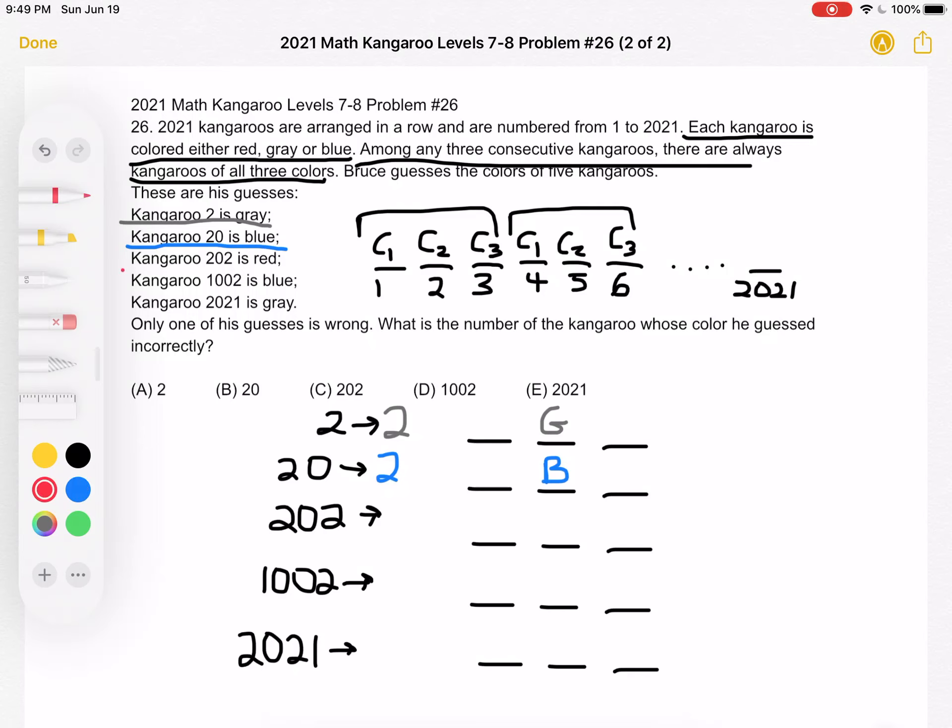Then for our third, we have kangaroo 202 is red. It's important to keep in mind that any number whose digits add up to a multiple of 3 is divisible by 3. So 202 is not divisible by 3, but 201 is because 2 plus 0 plus 1 is equal to 3 and 3 is divisible by 3. So that means that we have a remainder of 1.